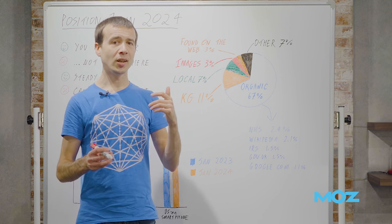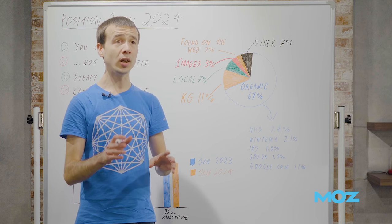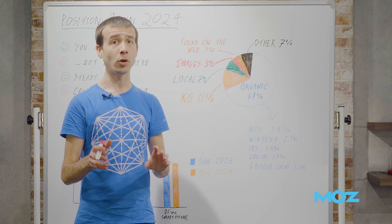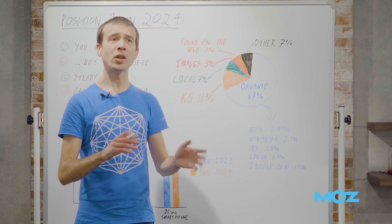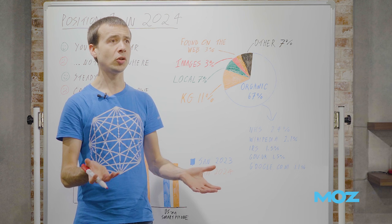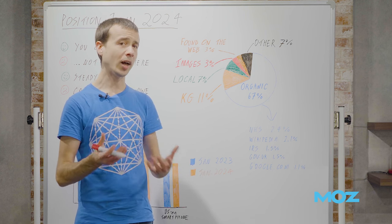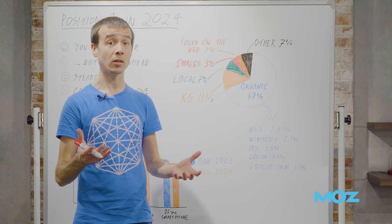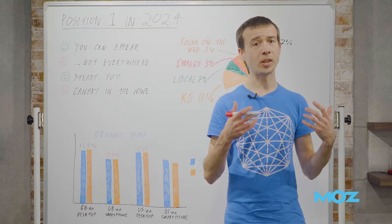Another way of saying this same statistic is that the average rank of the first organic result tends to be about 1.5 on desktop or about 2 on mobile. That doesn't sound amazing, but really that's not too bad when you consider how many other result types are out there.